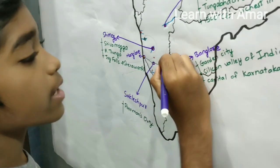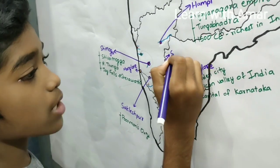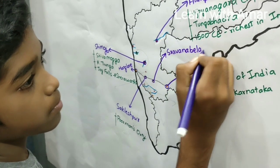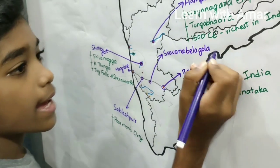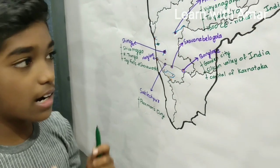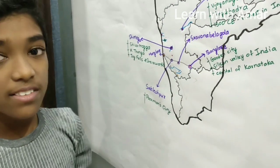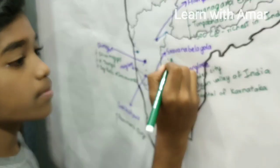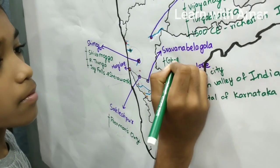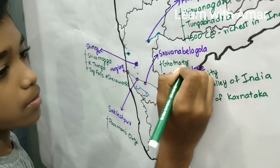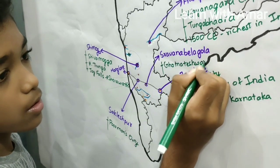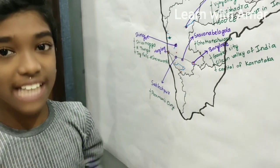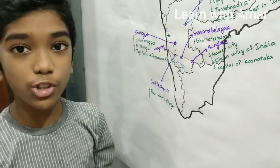Below the highway, right here, we find Shravana Belagola. A popular tourist destination here is the Gomateshwara Bahubali statue, which is the largest monolithic statue in the world.